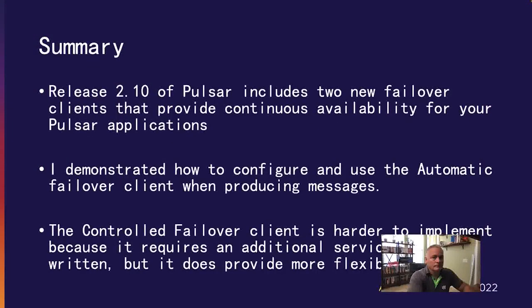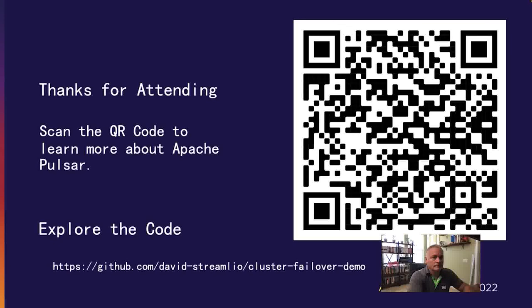In summary, release 2.10 of Pulsar includes two new failover clients that provide continuous availability for your Pulsar applications. I demonstrated how to configure and use both the automatic failover client when producing messages and the controlled failover client when consuming messages. The controlled failover client is harder to implement because it requires an additional service to be written, but it does provide more flexibility to you and your administrators. Thank you all for taking the time to attend this session. Feel free to scan the QR code shown here to learn more about Apache Pulsar and download available resources, including a free copy of my book.